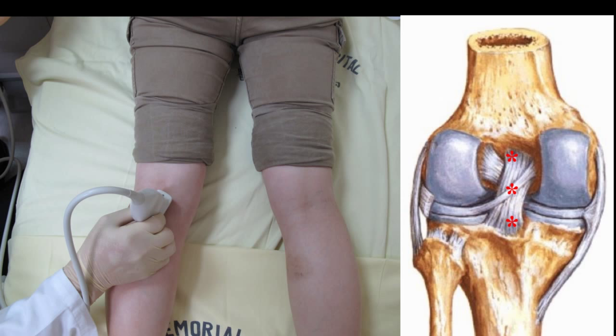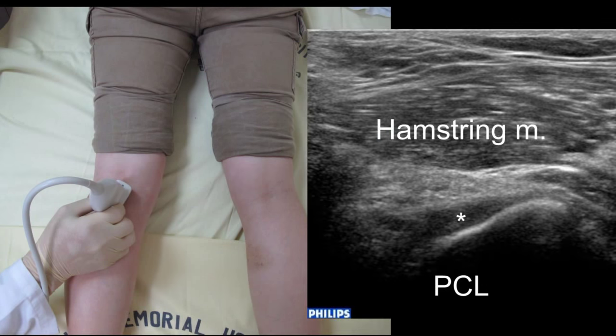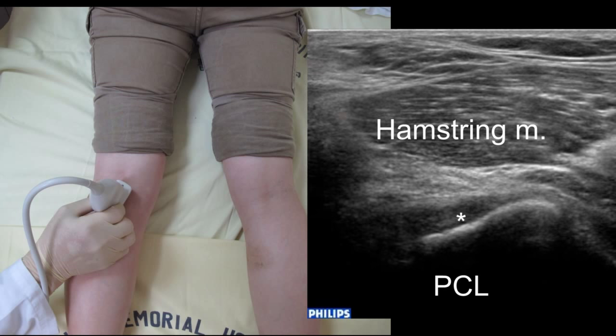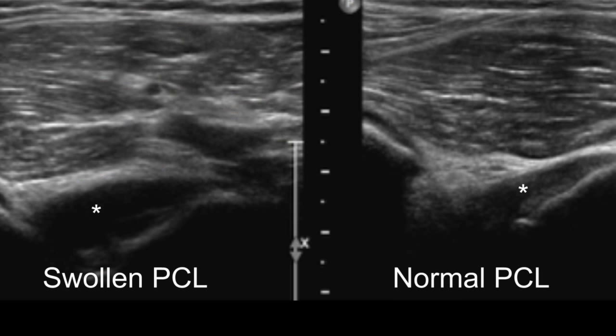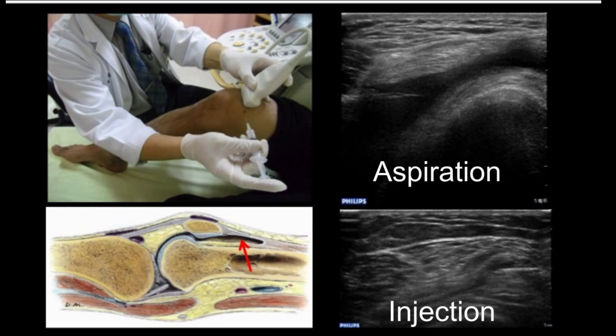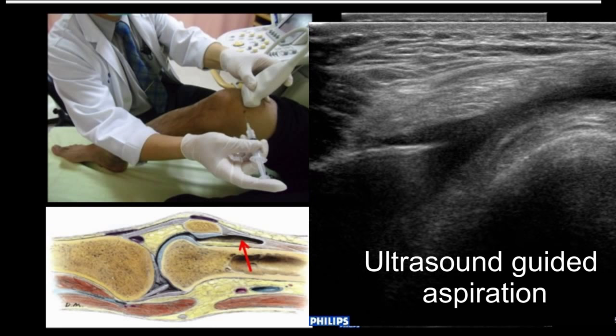Sonographic examination of the posterior cruciate ligament is performed at the popliteal fossa, with the patient lying prone with his or her knee fully extended. Ultrasound provides visualization of only its distal half. The average thickness of a normal posterior cruciate ligament is less than 1 cm. An injured posterior cruciate ligament tends to be relatively thicker, and a torn posterior cruciate ligament is usually heterogeneously hypoechoic with an indistinct or wavy posterior margin. Fluid accumulation in or around the knee joint is usually associated with knee ligament injury.